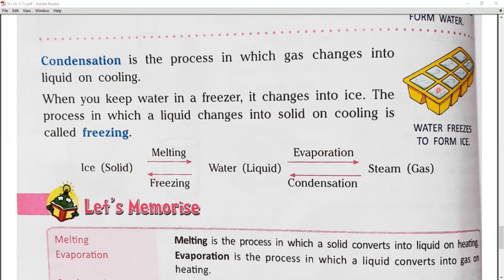After some time you will see that water has changed to ice. So the process in which a liquid changes into a solid is known as freezing. All three forms are written here: solid, liquid, and gas. We are taking the example of water. Solid example is ice, liquid is water, and gas is steam.